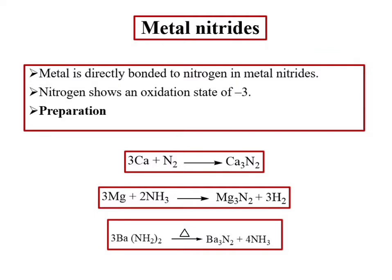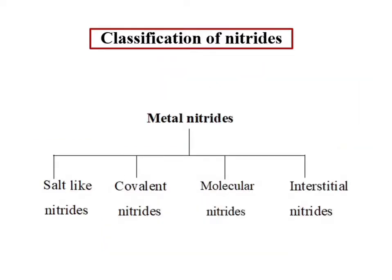We will find that the direct reaction of a metal with nitrogen generates metal nitrides. We can now look at the classification of metal nitrides and the general methods of preparation. Metal nitrides can be divided mainly into four classes.